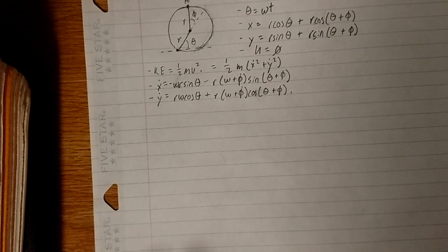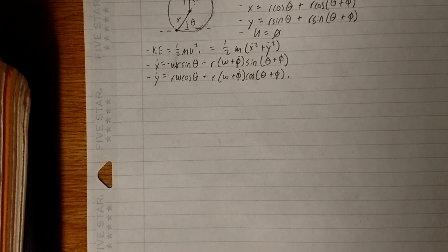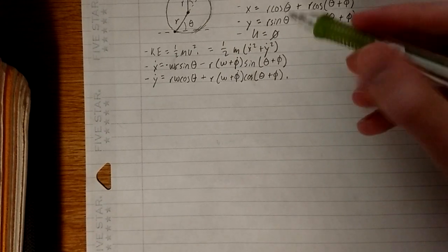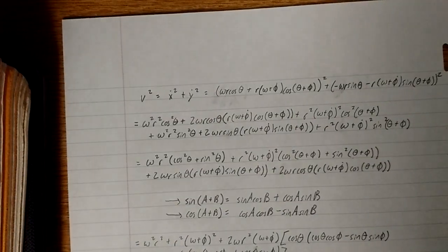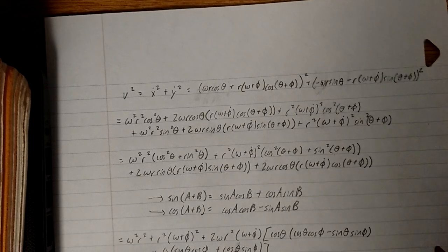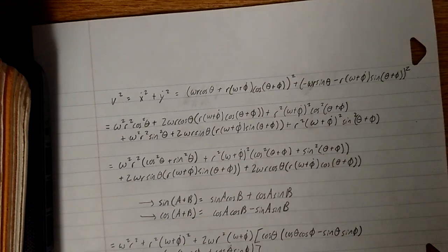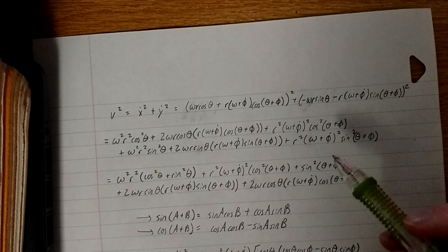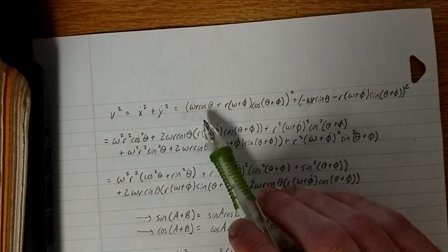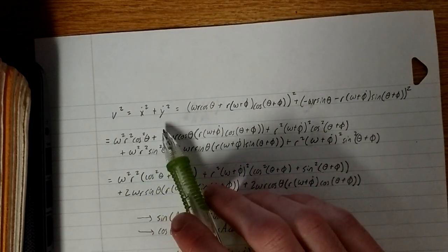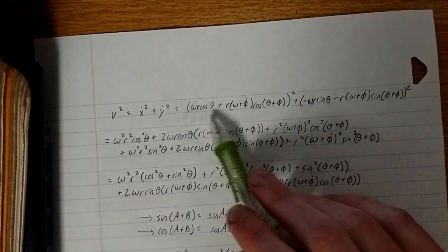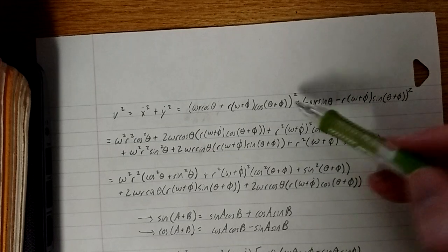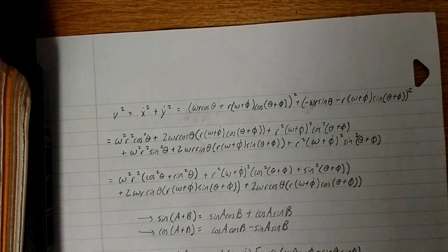Now, you might be looking at that and thinking about all kinds of horrible algebra that's going to come when we need to take the sum of the squares. And you're a little bit right. But thankfully, with the magic of recording, I can prepare some of this beforehand. So, you can see here, v squared, x dot squared plus y dot squared. And these are the two terms we just found. This is y dot, and this is x dot. And we take the quantity squared of both of them, of course.